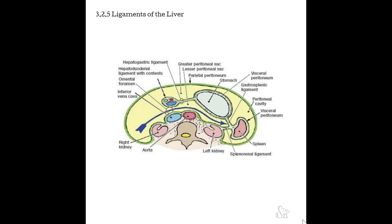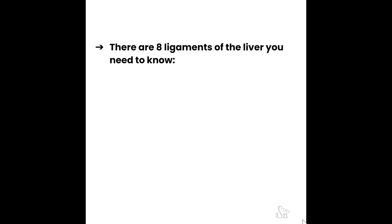Unfortunately, many liver ligaments have fancier names we'll need to memorize. However, most other ligaments in the body are organ-based, describing the two organs they connect — for example, the hepatogastric ligament connects the liver to the stomach, the splenorenal ligament connects the spleen to the kidney, and the gastrosplenic ligament connects the stomach to the spleen. We need to learn the ligaments of the liver specifically, and even though not all are visible by ultrasound, we should recognize them by diagram, location, and connection. There are eight ligaments of the liver to know.